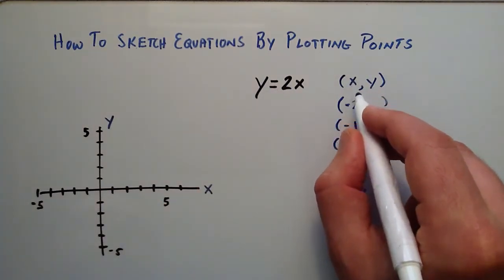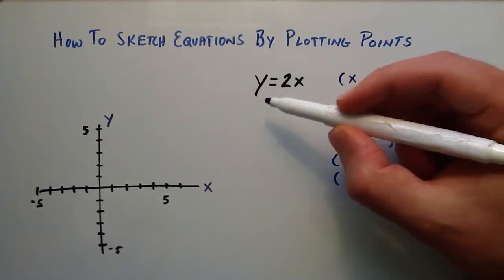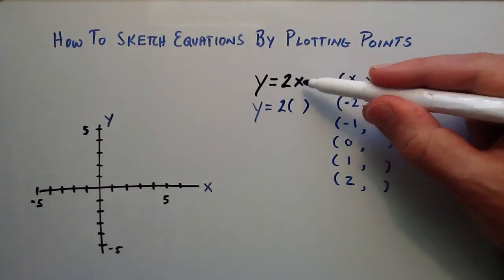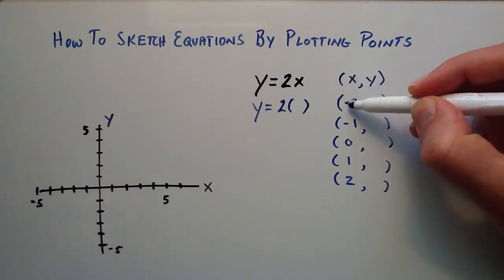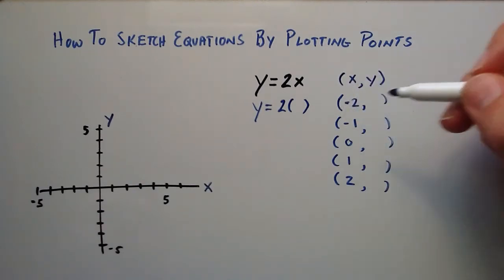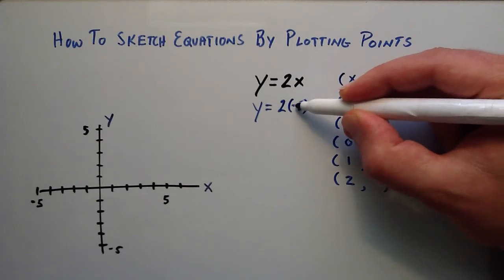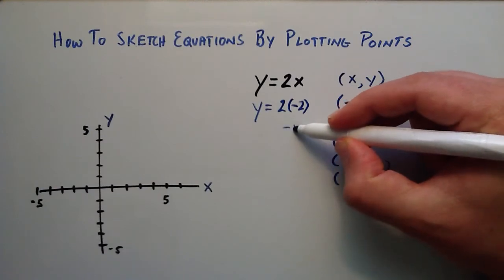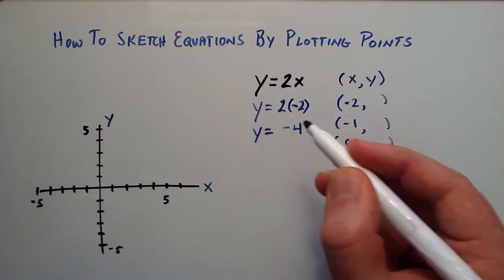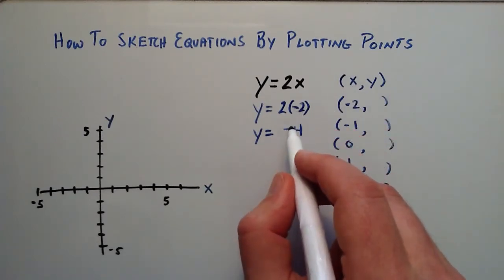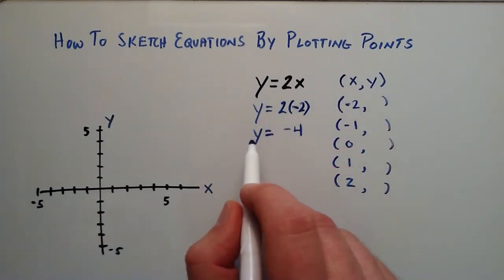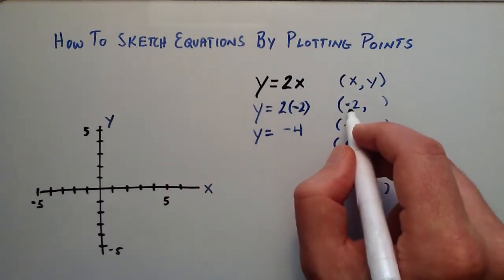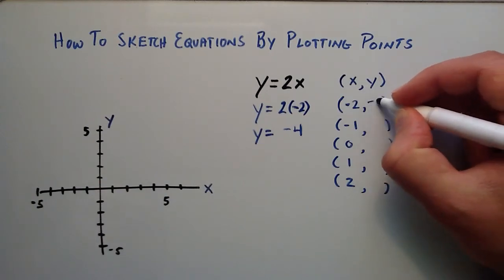For example, if we have an x component of negative 2, we write y equals 2x and replace x with negative 2. So 2 times negative 2 is negative 4. So y is equal to negative 4 when x equals negative 2. We put that corresponding y value right next to its x value in the ordered pair.